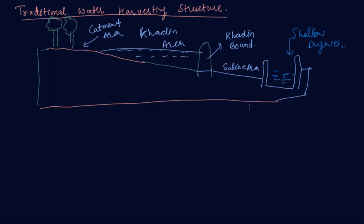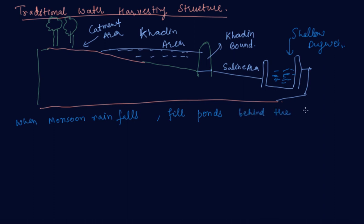In largely level terrain, the water harvesting structures are mainly crescent-shaped earthen embankments or low straight concrete and rubble check dams built across seasonally flooded gullies. These types of shallow dug wells can be made in these areas. When monsoon rain falls, it fills ponds behind these structures.